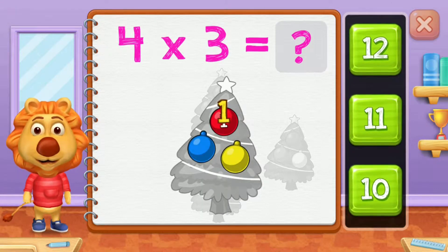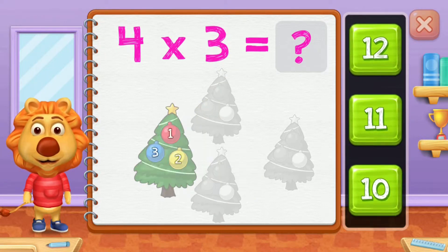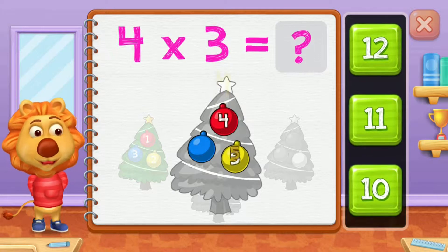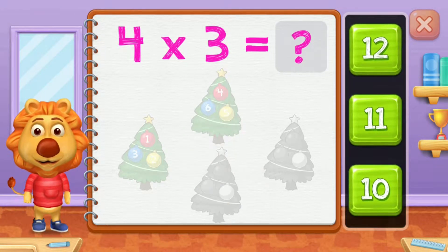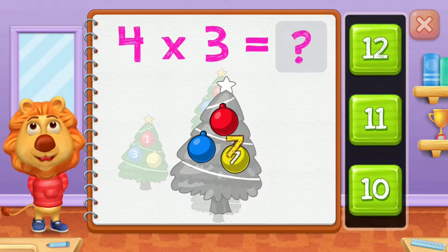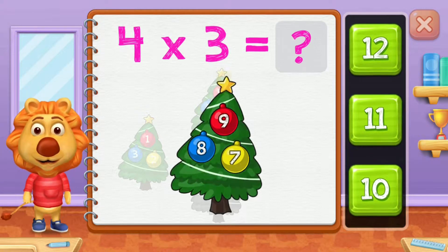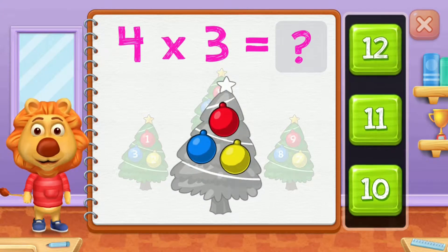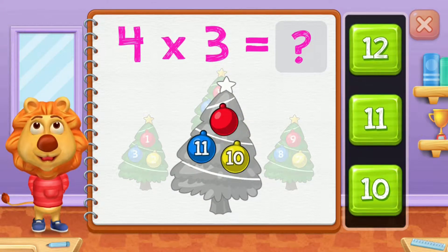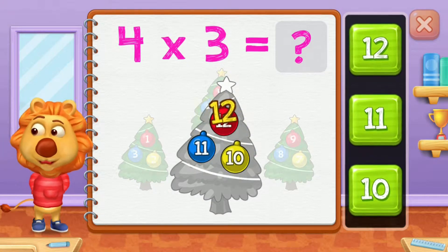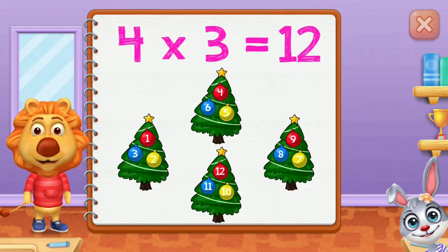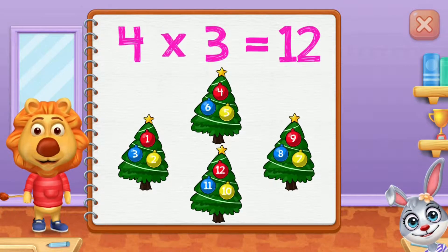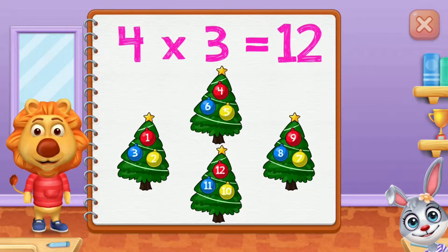1, 2, 3, 4, 5, 6, 7, 8, 9, 10, 11, 12. 4 groups of 3 equals 12.